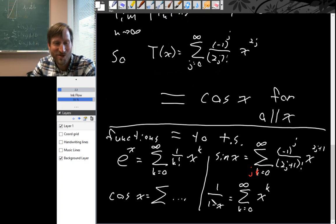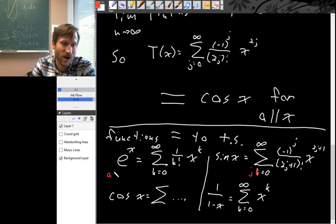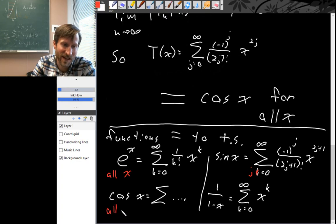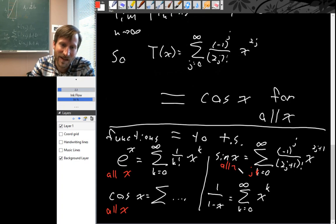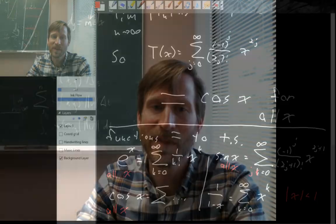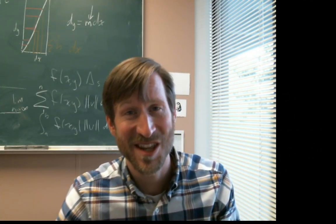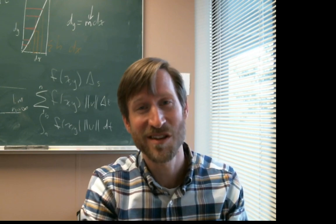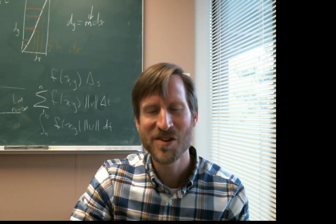You do need to remember where each of these converges. For e^x, this holds for all values of x. For cosine, we checked using the ratio test that this converges for all values of x. For sine, this was also for all values of x. But for 1 over (1 minus x), this is equal to its Taylor series only when the absolute value of x is less than 1. Most nice functions that you can write down are equal to their Taylor series wherever their Taylor series converge.